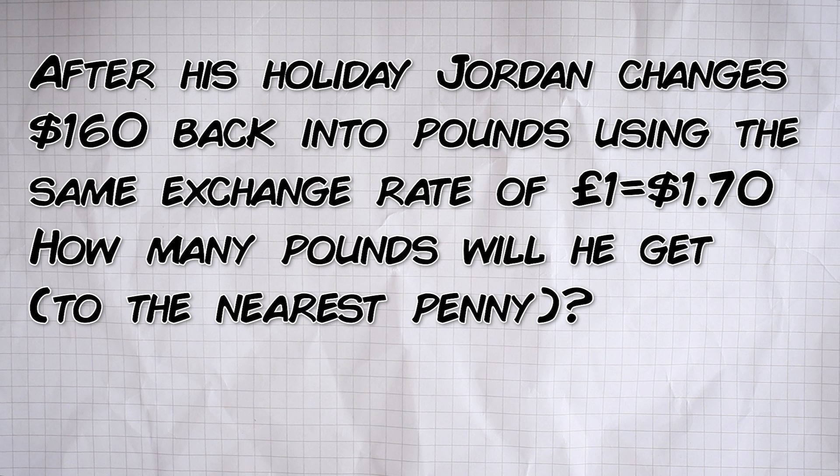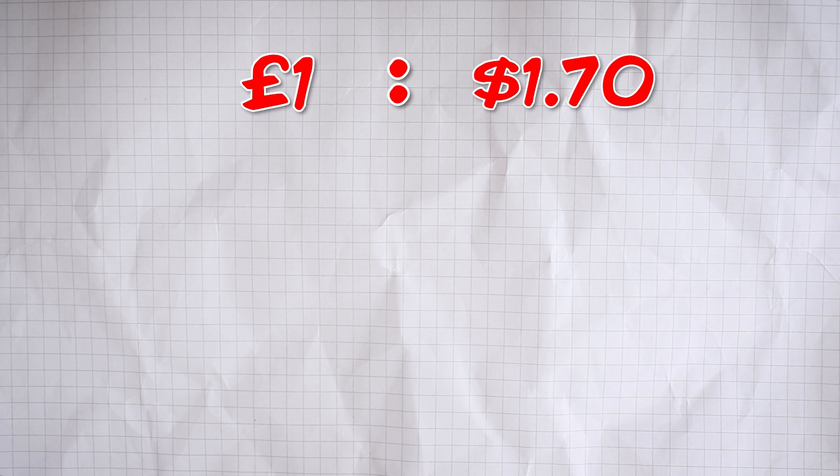We have the same exchange rate of £1 to $1.70 but this time we're going the other way. We're changing dollars to pounds. So, it's no problem. We'll start off in the same way by writing the ratio of dollars to pounds, 1 to 170.